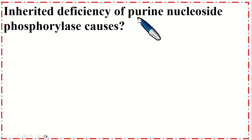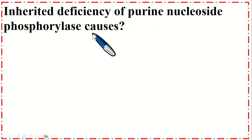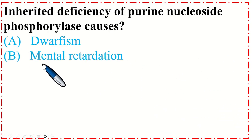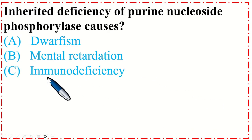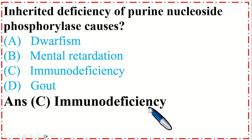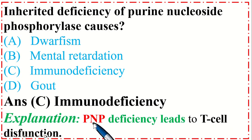Inherited deficiency of purine nucleoside phosphorylase causes: Option A. Dwarfism, B. Mental retardation, C. Immunodeficiency, and D. Gout. The correct option is C, immunodeficiency. PNP (purine nucleoside phosphorylase) deficiency leads to T cell dysfunction.